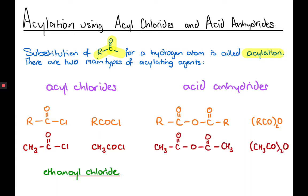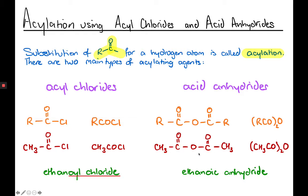About 90% of the time in A-level questions, if there's an acid anhydride in the question, it will be ethanoic anhydride. The R group is just a CH₃ group, so each acyl group is two carbons — hence eth-. Propanoic anhydride occasionally appears; the only difference is CH₃CH₂ attached to each carbonyl. The condensed formula would be written as (CH₃CH₂CO)₂O. From the name, we recognise it as an acid anhydride from the -oic anhydride ending.